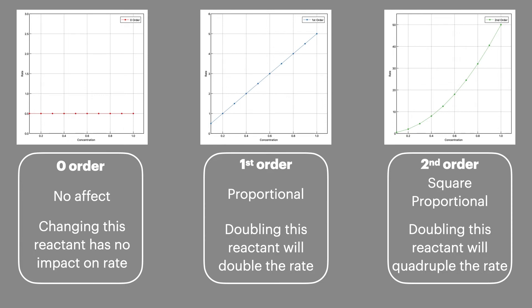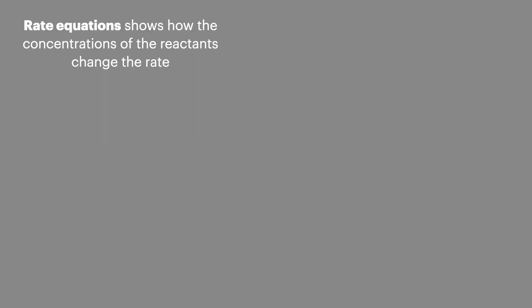Now orders can only be determined from experimental data and I'll explore how to do that on my next episode. Once we've calculated the orders we can build what we call a rate equation. This shows the impact of any reactants on the rate. If a reactant is zero order we don't include it in the rate equation.